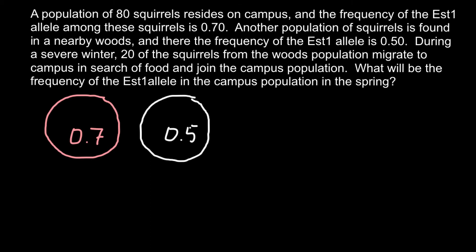We are also given that the number of individuals in the campus population equals 80, and from the woods population, 20 individuals, 20 squirrels migrated and formed a new mixed population. So we would have 20 individuals here with an allele frequency of 0.5.